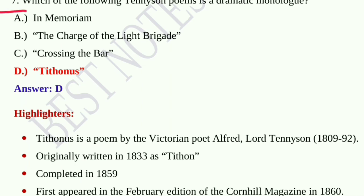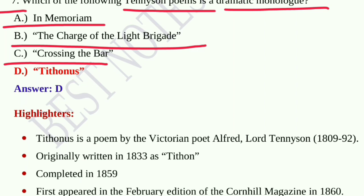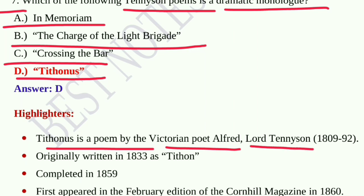Question number seven: Which of the following Tennyson poems is a dramatic monologue? Option A, In Memoriam; option B, The Charge of the Light Brigade; option C, Crossing the Bar; option D, Tithonus. Tithonus is the correct option. Tithonus is a poem by the Victorian poet Alfred Lord Tennyson, originally written in 1833, completed in 1859, and first appeared in the February edition of Cornhill Magazine in 1860. It is a dramatic monologue.